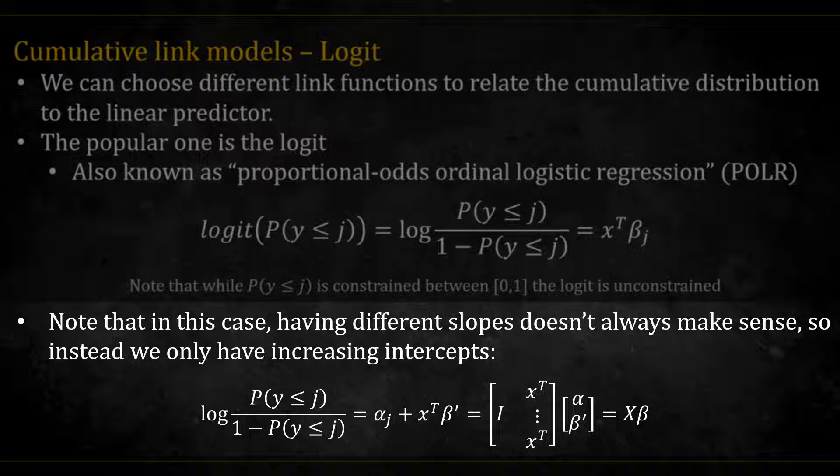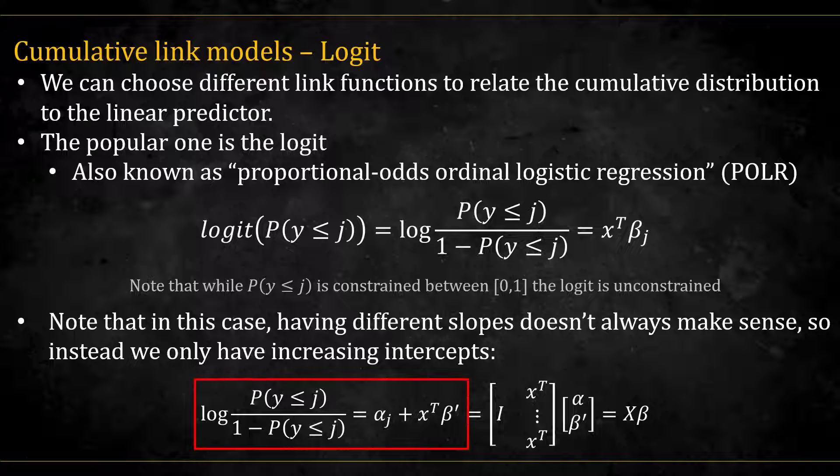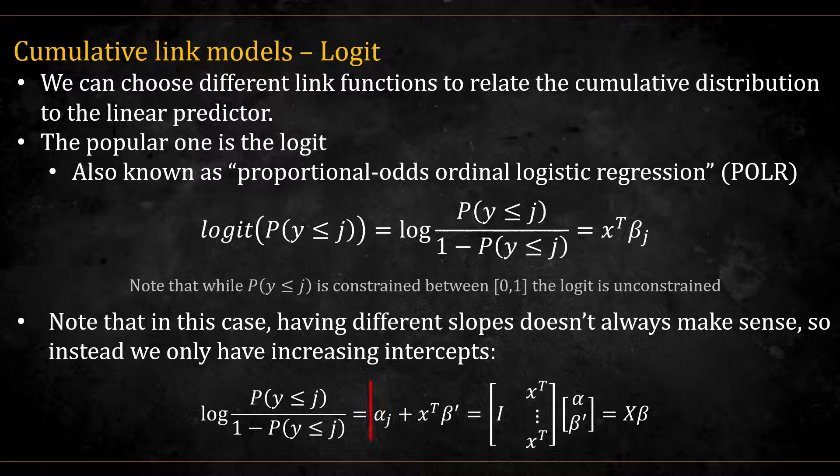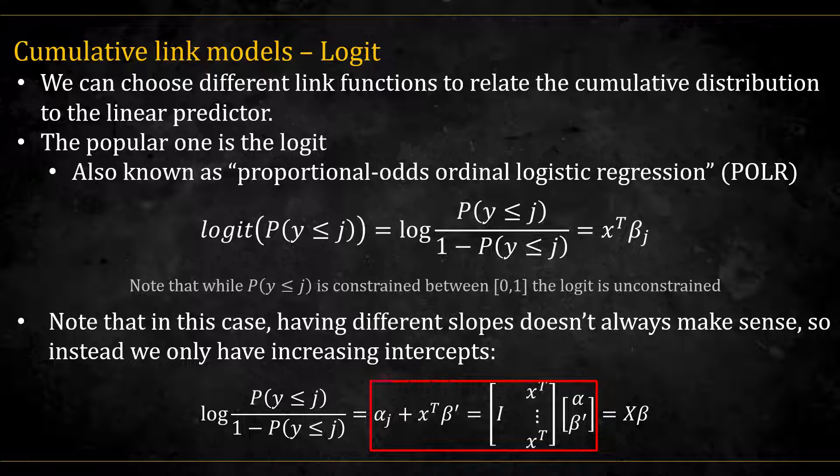Note that in this case, having different slopes doesn't always make sense. So usually we use the same slopes, but have increasing intercepts. The model looks like this. And we can write this in matrix form like this. For notation ease, let's call this whole thing x times beta.